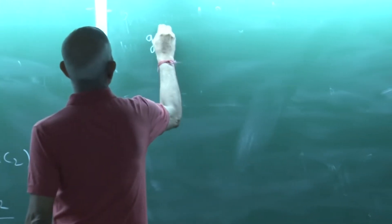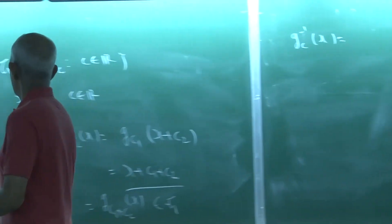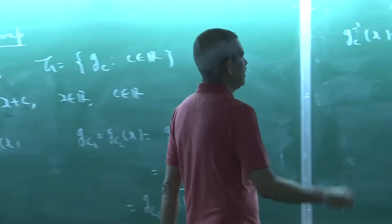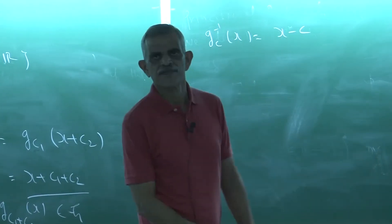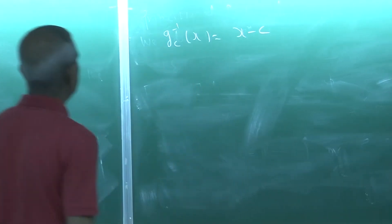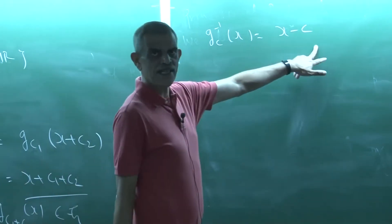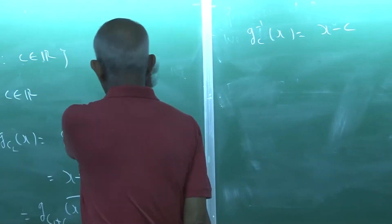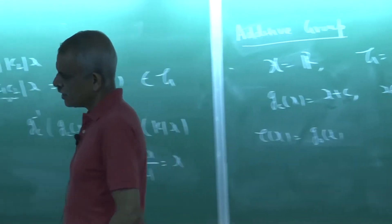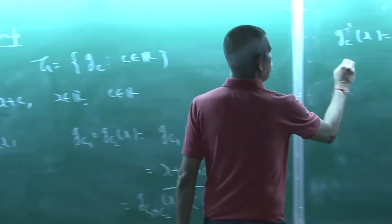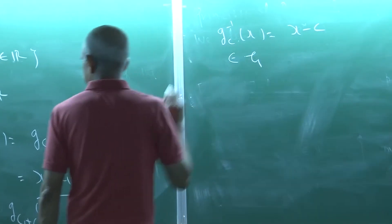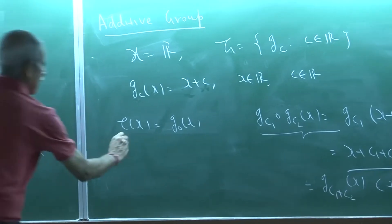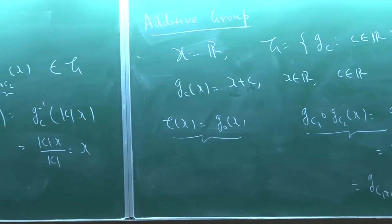For the inverse transformation: if x + c = y, then x = y − c. So G_c⁻¹(x) = x − c = G_{−c}(x), since G_{−c}(x) = x + (−c) = x − c. Applying G_c⁻¹ to G_c(x) gives x − c + c = x, which is the identity. So there is an inverse transformation, closure under composition, and an identity, making this a group of transformations.